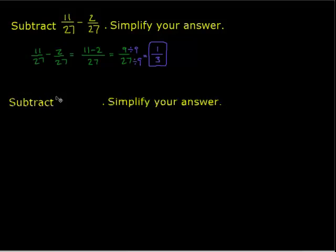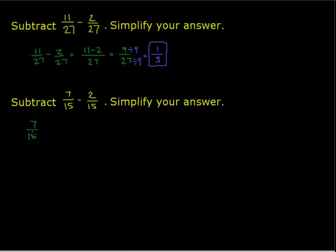So let's take a look at another example. Let's subtract 7 15ths minus 2 15ths. We have like denominators already, which makes our work a bit easier. So now all we need to do is subtract the numerators. 7 minus 2 over 15. We kept the same denominator. Well, 7 minus 2 is 5 over 15.